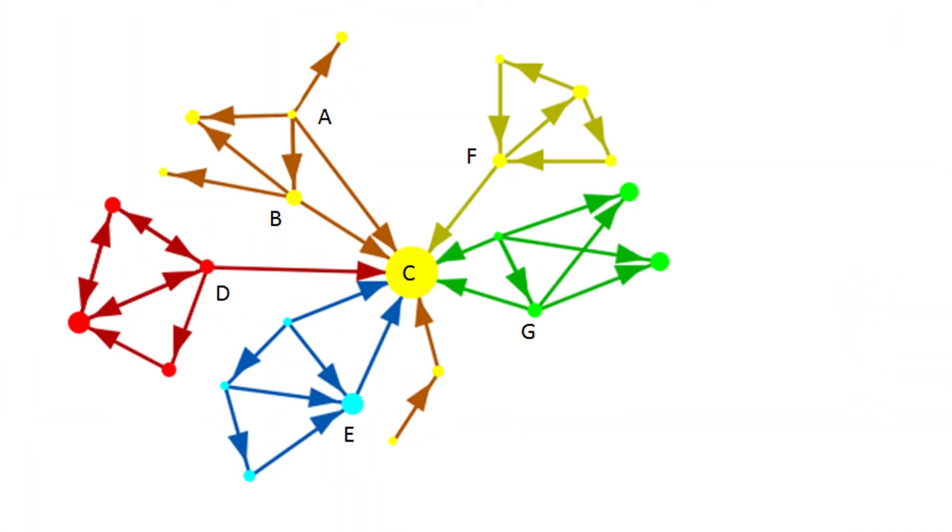So in our map, you can easily see that the blue clique is distanced from the green, red, brown and yellow cliques. Let's look at another example.